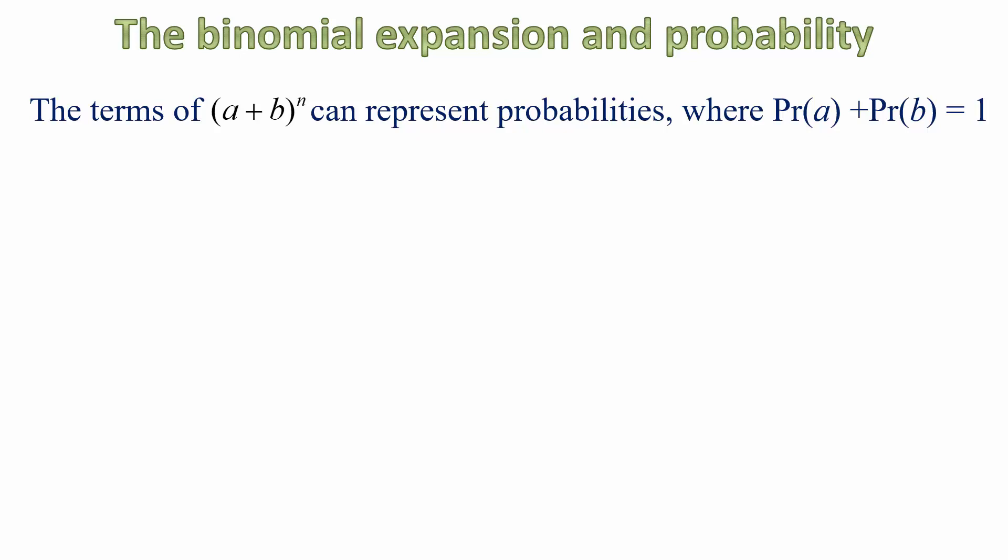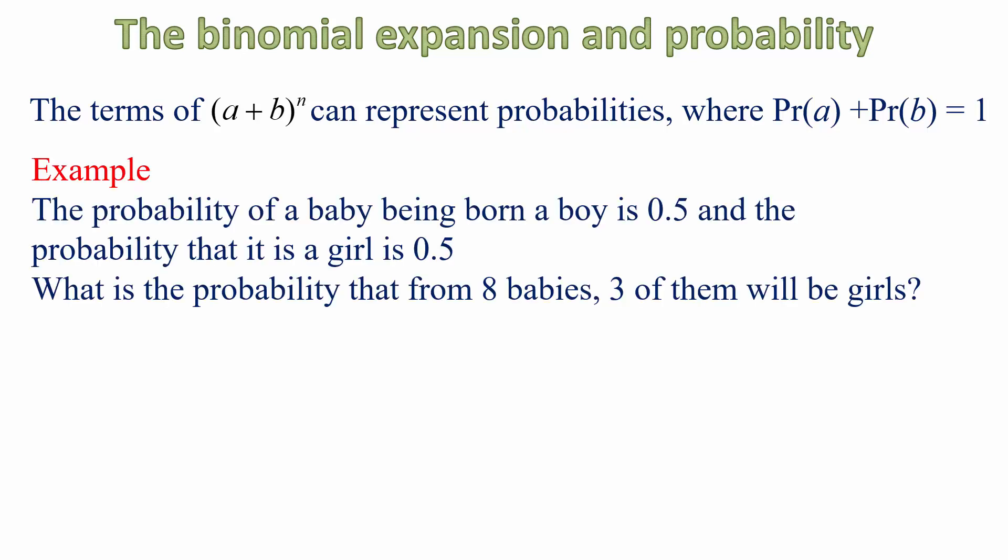It turns out that there is a strong connection between the expansion of A plus B to the power of N and probabilities, particularly when the probability of A plus the probability of B is equal to 1. And that's why it's referred to as a binomial probability. And we can show that with an example. In the normal course of events, the probability that a baby is going to be born a boy is a half, 0.5. And the probability that the baby will be a girl is also 0.5.